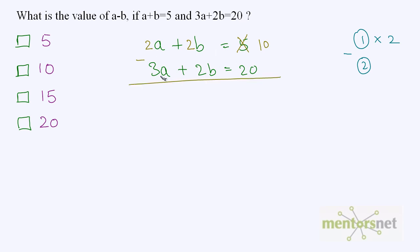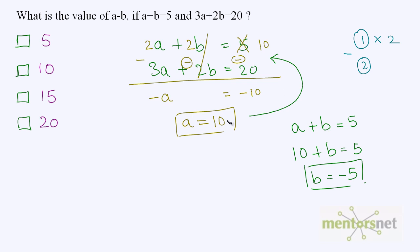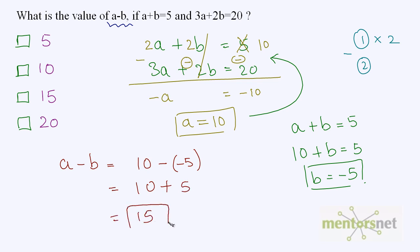2a minus 3a gives you minus a. 2b minus 2b gets cancelled out, equal to 10 minus 20, so that is minus 10. Therefore, we have the value of a as 10. Now we calculate the value of b by putting a equal to 10 in equation 1, which is a plus b is equal to 5. So 10 plus b is equal to 5, giving b is equal to 5 minus 10, that is minus 5. You have been asked the value of a minus b, which is 10 minus (minus 5), equal to 10 plus 5, that is 15.